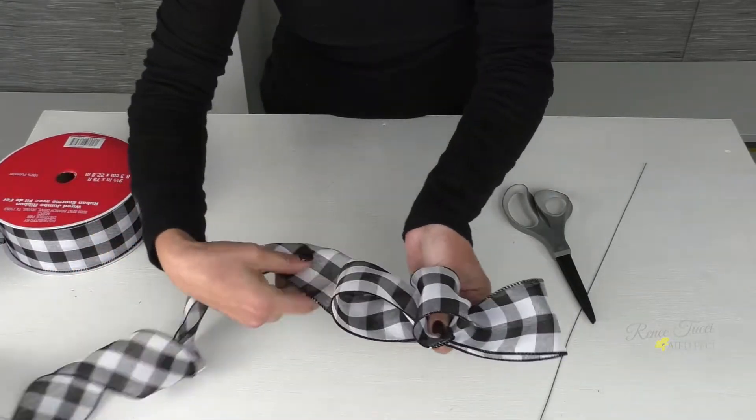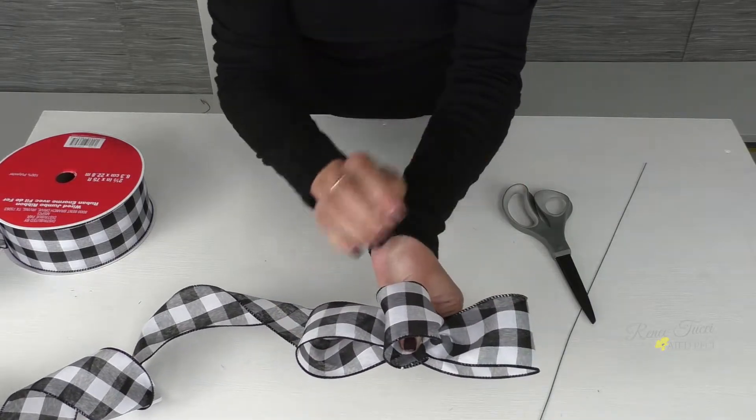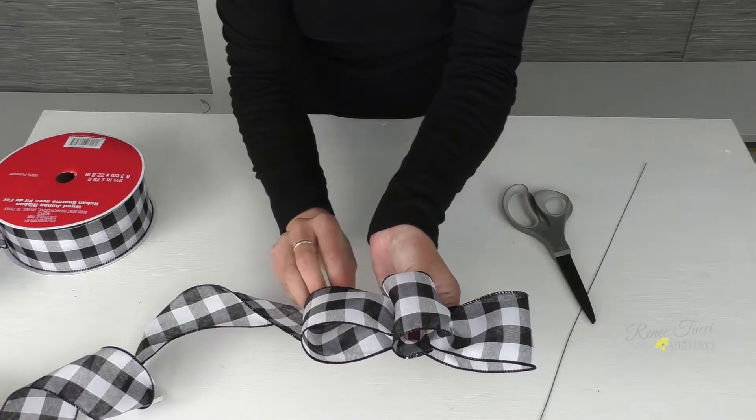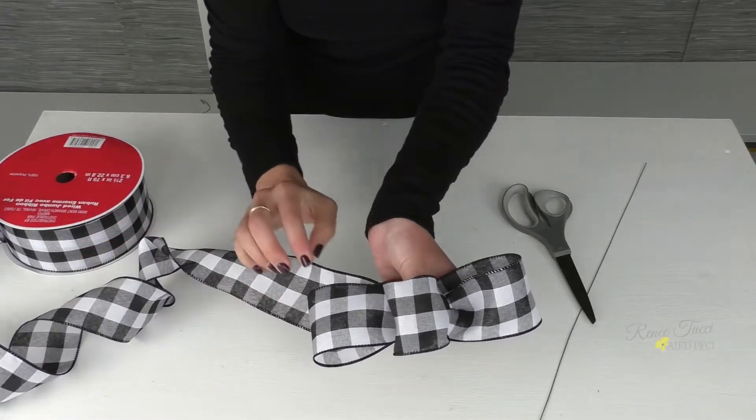And now we're back to the right side. Here's our right side, here's our left side. We're back to our right side and we're going to now do the same thing again. Create our second set of loops.